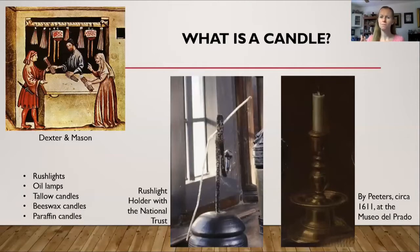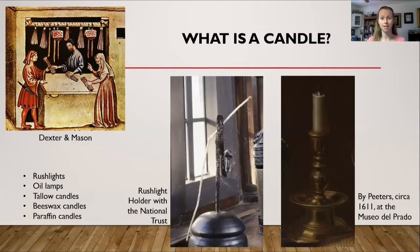So first, what is a candle? Today I will be describing and discussing what a rush light is compared to oil lamps in history, as well as tallow candles, beeswax candles, and paraffin candles. The picture in the middle is an example of what a rush light is, and the picture on the right side is a picture of a candle as we know it in today's world. I'll be getting more into the differences between the rush light and the candle later on in the video.